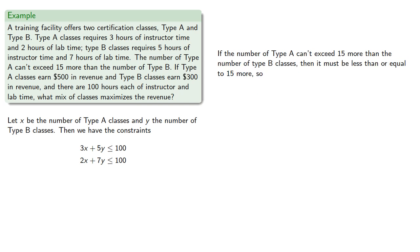If the number of type A classes can't exceed 15 more than the number of type B classes, then it must be less than or equal to 15 more. And so that gives us the inequality, which we can put into standard form.